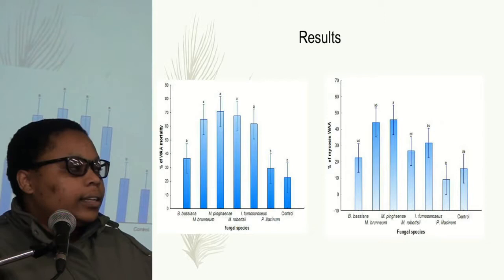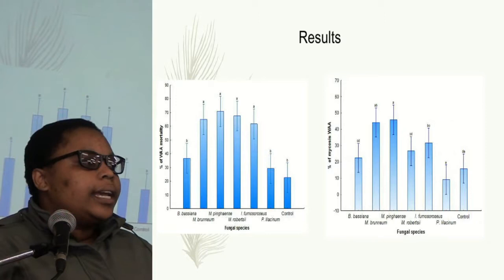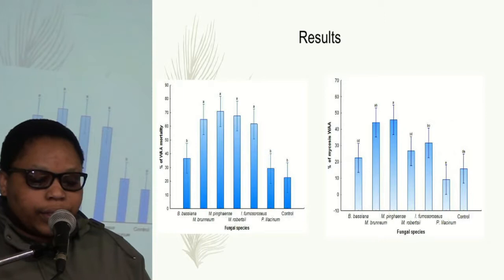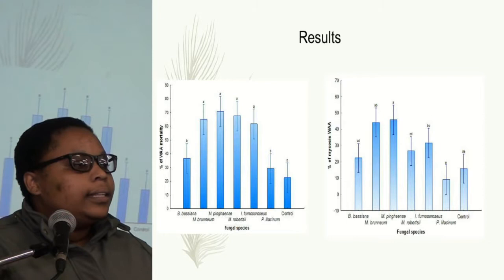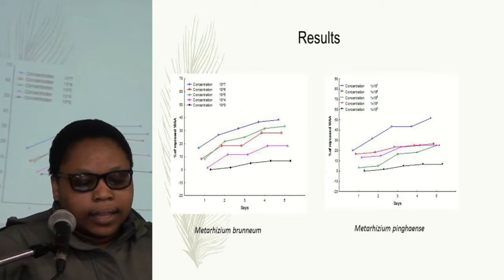Results from my study initially showed that four of the collected isolates showed potential in controlling the woolly apple aphid. However, further analysis showed that only two of the isolates — Metarhizium brunneum and Metarhizium pingshaense — showed a greater potential in controlling the woolly apple aphid.